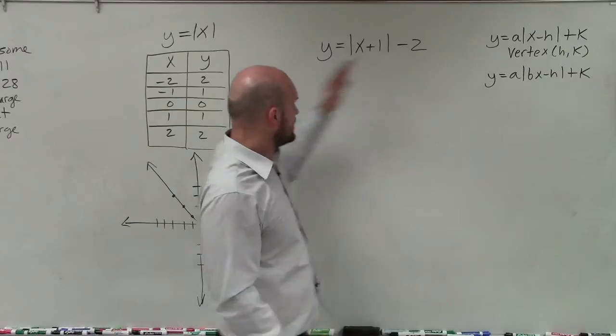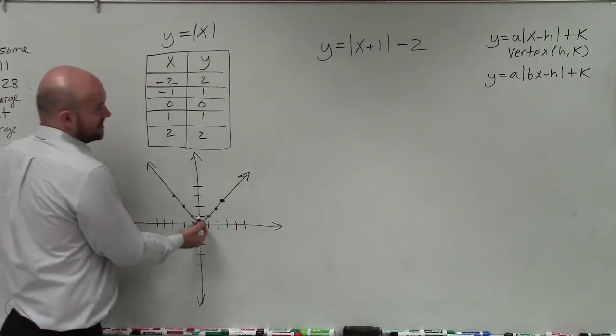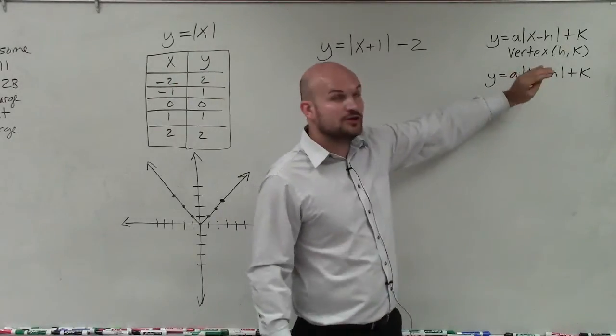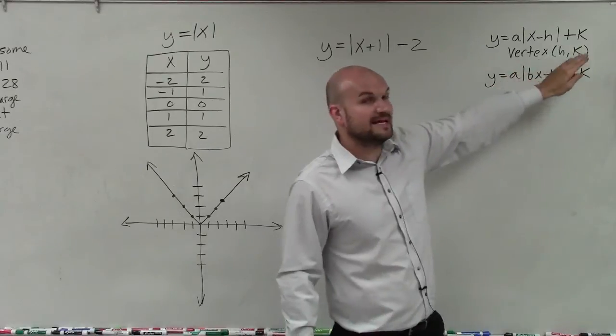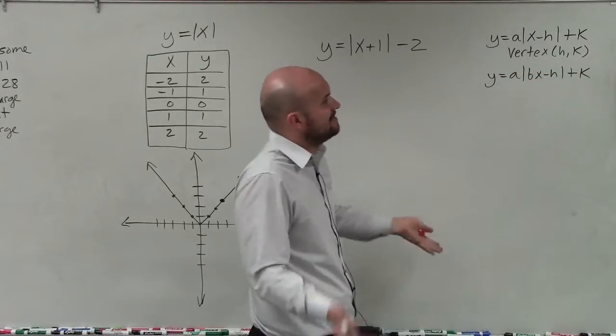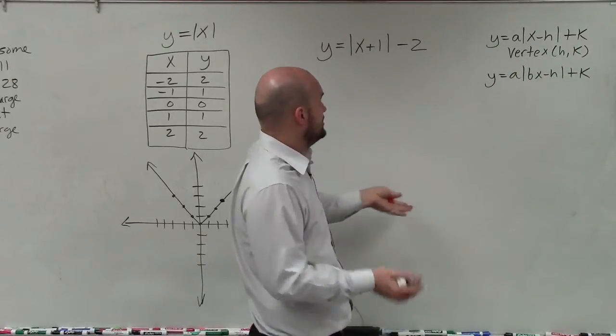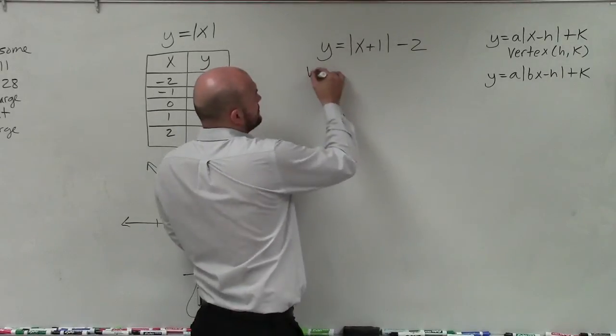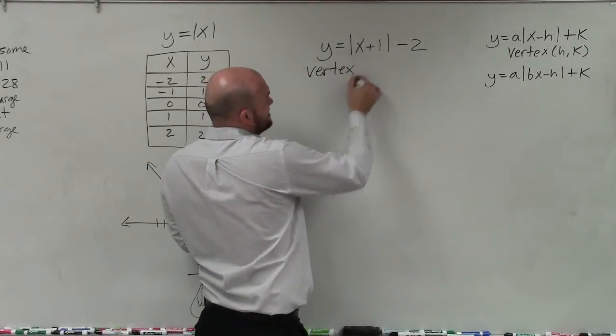So if our original vertex is at 0, 0, the value of our new vertex with transformations is going to be h and k. So now I just need to identify what exactly are my new h and k, or at least what is my new vertex.